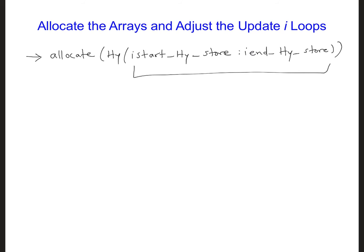For example, processor 0 will read this line, and since IStart HY Store is equal to 1, processor 0 will create an HY array that goes from 1 to IMAX divided by 2.